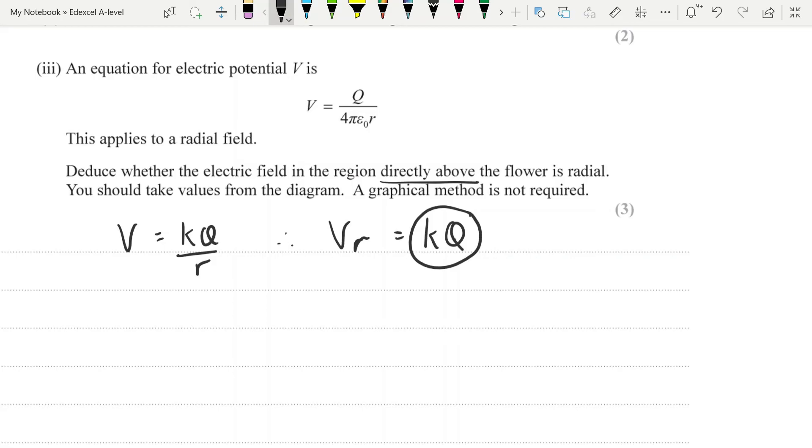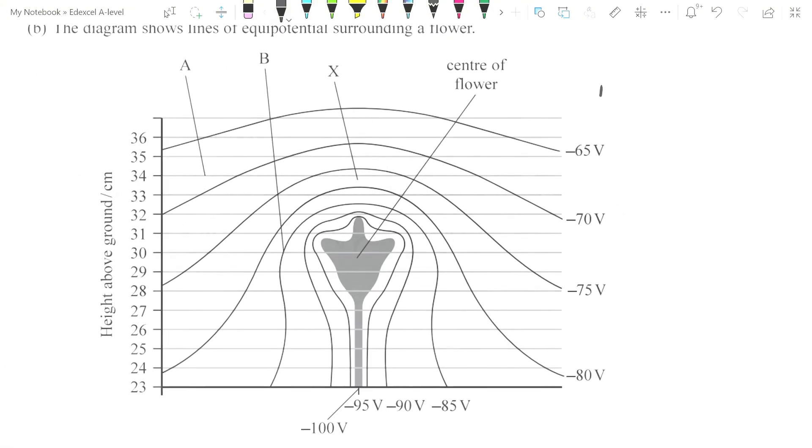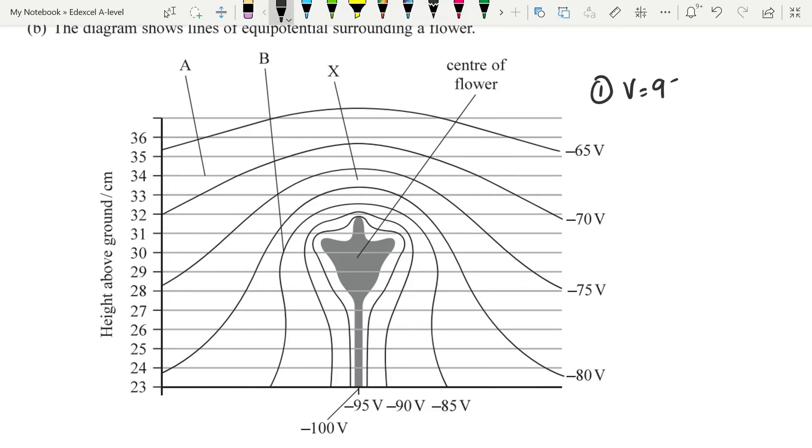How many should you take? I would say three, just to be sure. So I'm going to do this up next to the diagram so we can both measure and calculate at the same time. The first value of Vr I'm going to take at where V is equal to minus 95 volts. And I want to see what the R from the center of the flower is. So that's the center of the flower there at about 29.8. How far away from that is our minus 95 line? And that looks to me like 31.8. So R I'm going to say is 2 centimeters, making Vr minus 190 volt centimeters. OK. That's our first one.